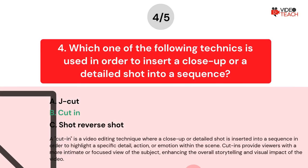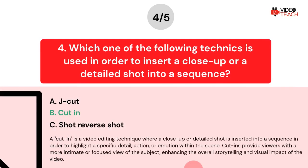The correct answer is B. A cut in is a video editing technique where a close-up or detailed shot is inserted into a sequence in order to highlight a specific detail, action, or emotion within the scene. Cut ins provide viewers with a more intimate or focused view of the subject, enhancing the overall storytelling and visual impact of the video.